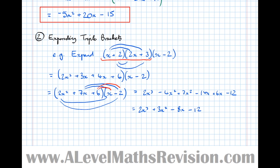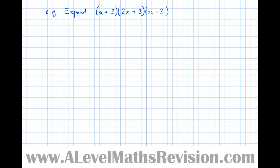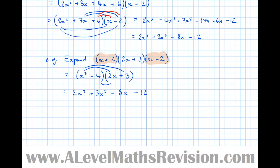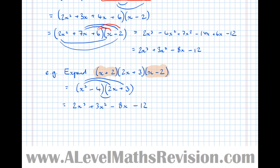I've deliberately done that the complicated way, because if we look at the original question more closely, we can see that choosing to multiply the brackets in a different order reveals a difference of two squares: x plus 2 times x minus 2 equals x squared minus 4. So we get x squared minus 4 times 2x plus 3, which expands to the same answer — 2x cubed plus 3x squared minus 8x minus 12 — with less than half the working. So look for a difference of two squares and spot tricks like that.